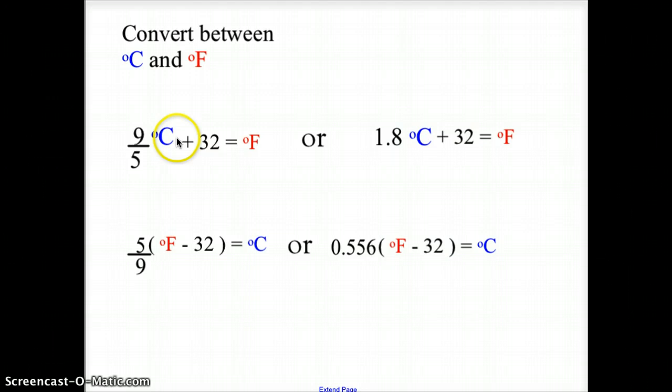To change from Celsius to Fahrenheit, you multiply the Celsius degree by 9/5, add 32, and then you get the Fahrenheit temperature. 9/5 is the same as 1.8 degrees Celsius. So 1.8 times the degree Celsius plus 32 will give you Fahrenheit.